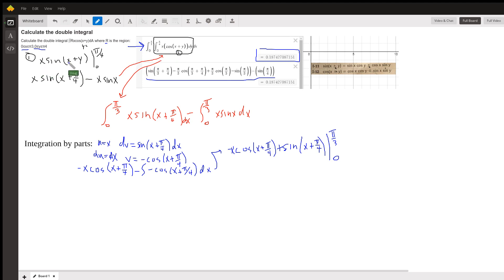So the anti-derivative of the cosine of x plus y is the sine of x plus y. x is just a constant. And if I evaluate that from zero to pi over four, I'm putting pi over four in for this y right here, and then I'm putting zero in for the y. So this is what I get for the inside integral.